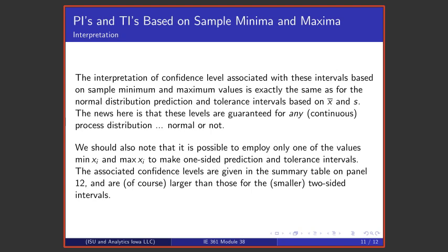The interpretation of the confidence level associated with intervals based on minimum and maximum values is exactly the same as for the normal distribution prediction and tolerance intervals. The news here is that these confidence levels are guaranteed even if the distribution is not necessarily normal. I should say that it's possible to make one-sided intervals both for normal-based prediction and tolerance intervals and these intervals based on extreme values in the sample, and one simply adjusts the confidence levels appropriately.